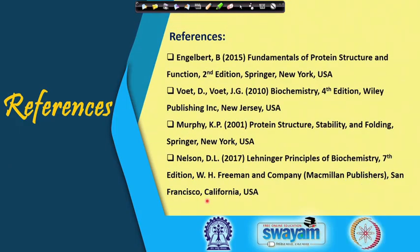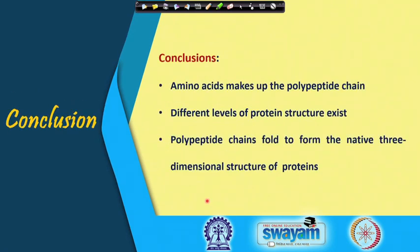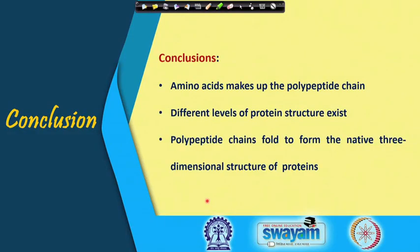Looking at a full protein representation — beta sheets shown as arrows, turns as linkers, and alpha helices — this gives us a complete protein structure, for example ribonuclease A with PDB identifier 1fs3. In summary, amino acids make up the polypeptide chain as the building blocks of proteins. There are different levels of protein structure, and we will look at tertiary structure, specific folding characteristics, and the forces that hold the protein together in the next lecture.